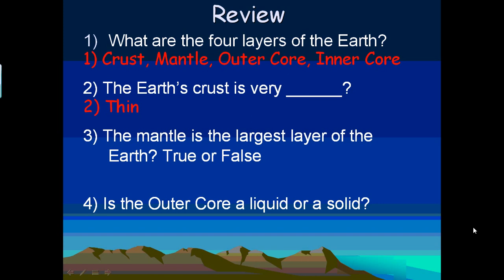The crust is very thin—it is our thinnest layer. The mantle is the thickest layer of Earth. The outer core is liquid, made of iron and nickel.